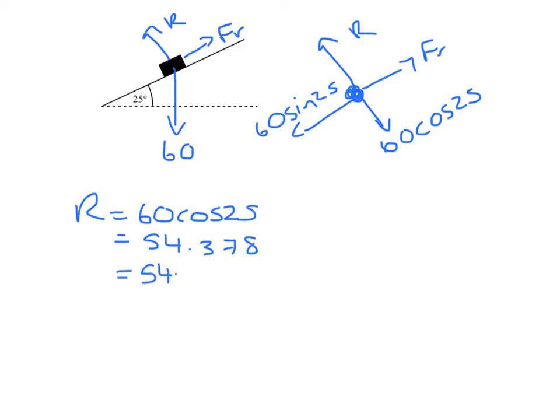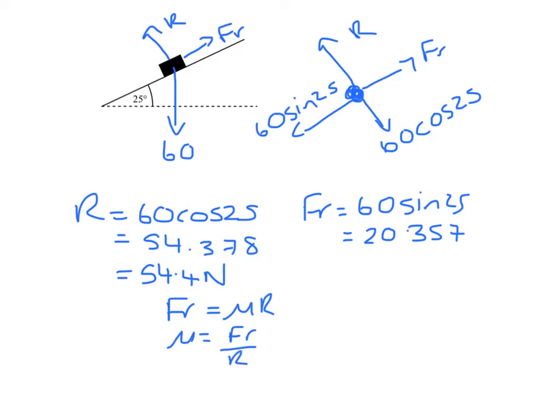Friction must equal 60 sine 25, so that gives us 25.357. And we know that friction equals μR, so μ will be my value for friction divided by my normal reaction.